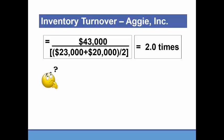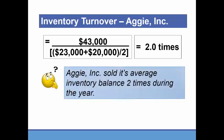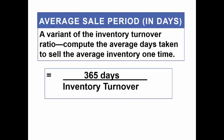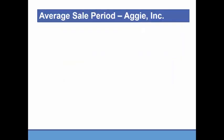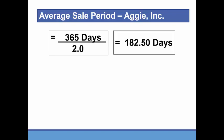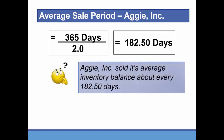So what can management conclude? The company sold its average inventory balance 2 times during the year — about every 6 months. Like accounts receivable turnover, we can convert inventory turnover into days using the average sale period: 365 days divided by the inventory turnover. So 365 divided by 2.0 gives 182.5 days to sell the average inventory, which is again about twice a year.